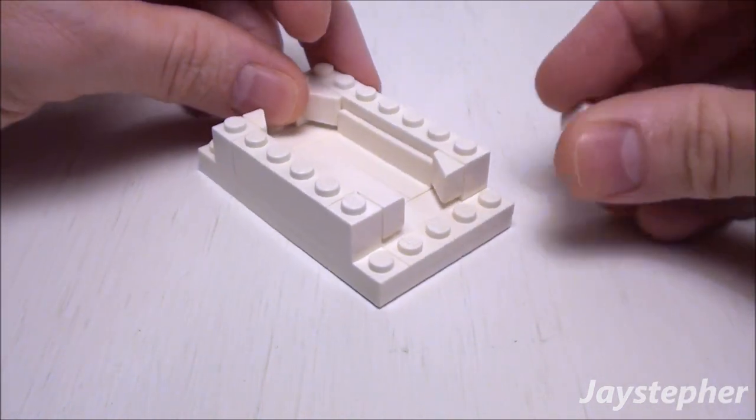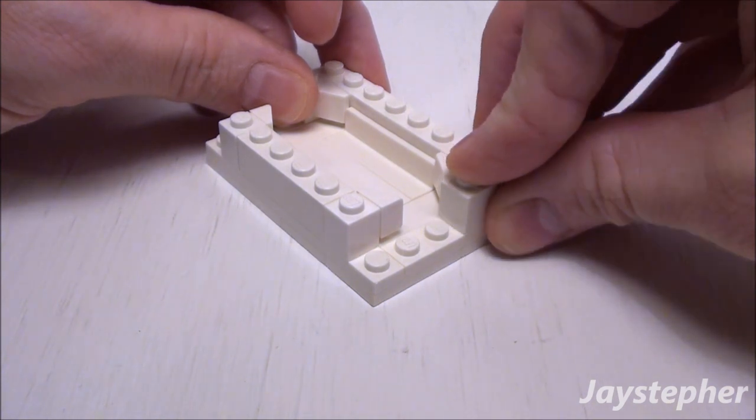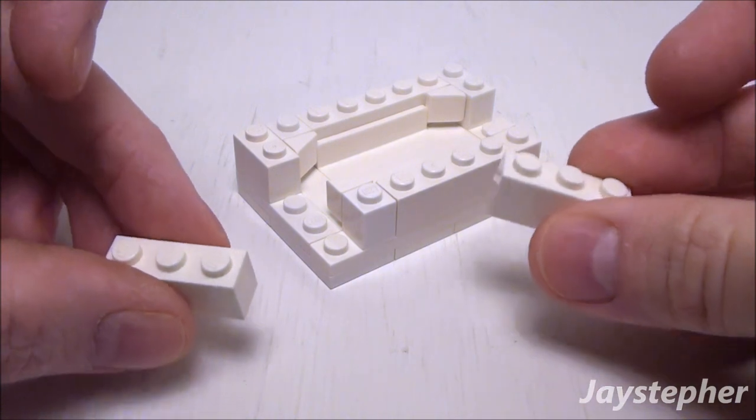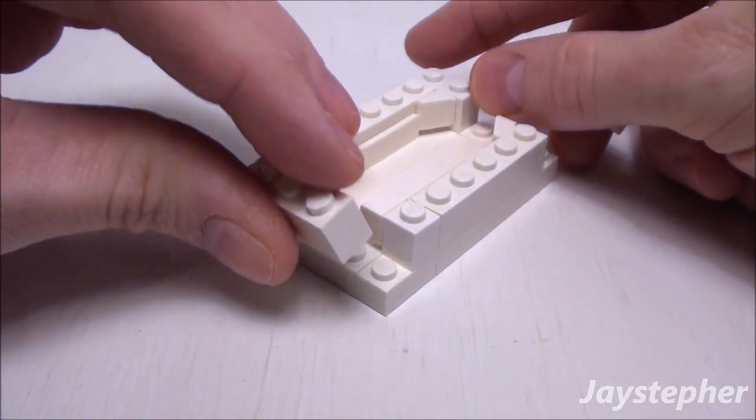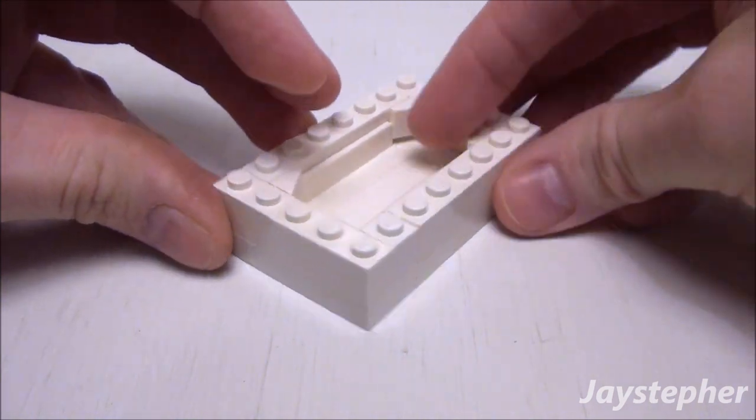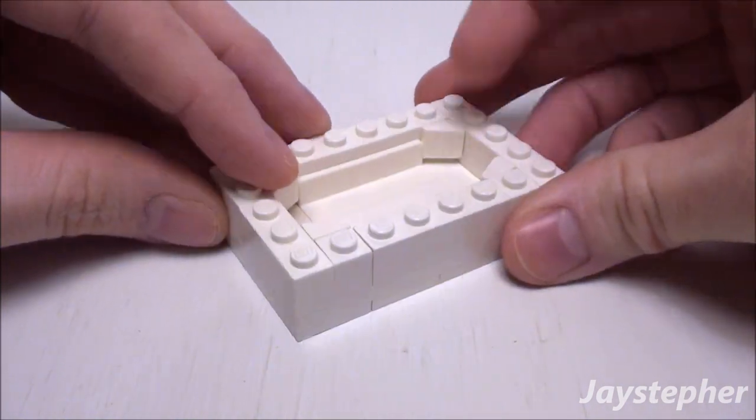Take another 1 by 2 brick and place it on the other side like so, followed by two 1 by 3 bricks. Place them in the remaining areas. This will keep everything locked together.